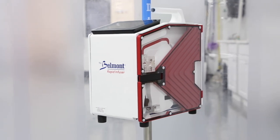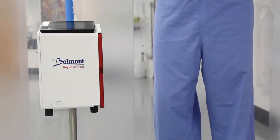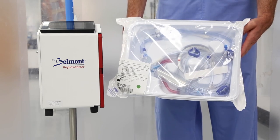The Belmont Rapid Infuser RI2 consists of two main components: the control system, which is mounted on an IV pole, and the disposable set.